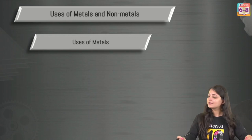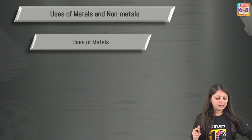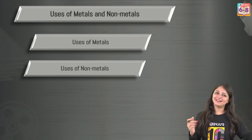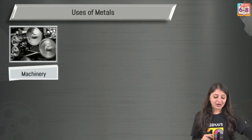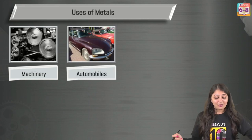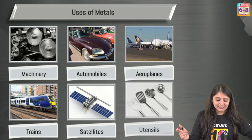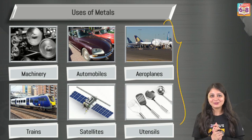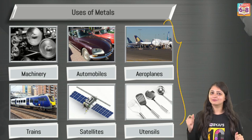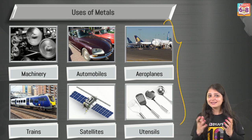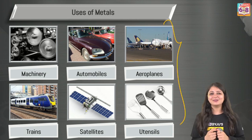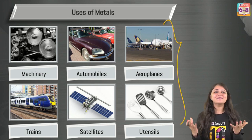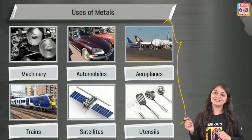We keep using metals and non-metals in everyday life. For metals: machinery, automobiles, aeroplanes, trains, satellites, and utensils are all made of metals. Electric wires use copper, thermometers contain mercury, jewellery uses silver or gold, and aluminium foil is used for packaging. Uses of metals are something we are very much aware of.